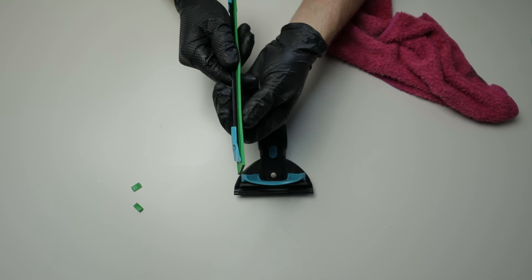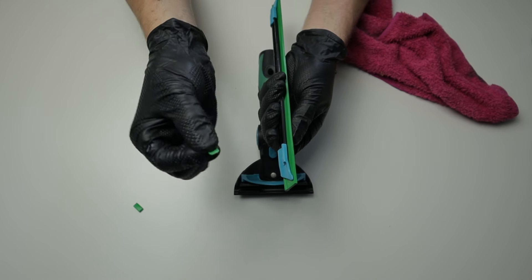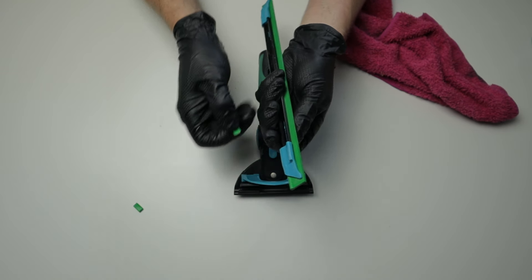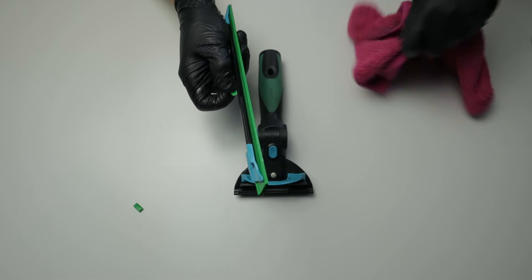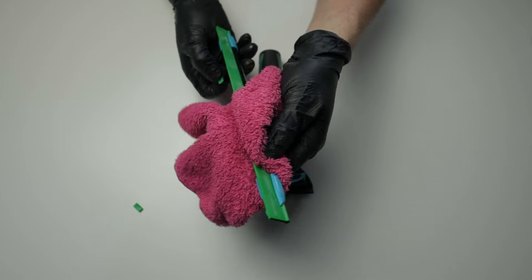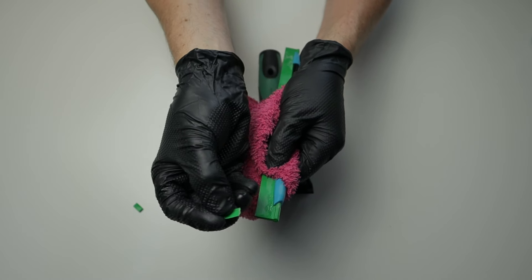What we do is we take some of these, which are Unger Green Clips. These are designed to hold your squeegee rubber in place nice and snugly. Again, taking our cloth, it just helps to hold that squeegee rubber. Get hold of your squeegee rubber nice and tight. And then taking your Unger Green Clip...